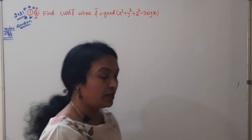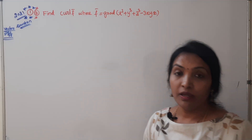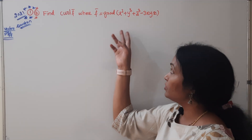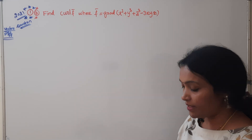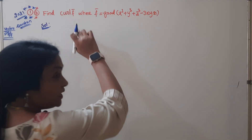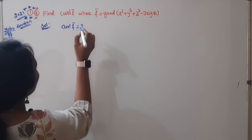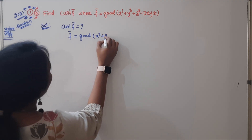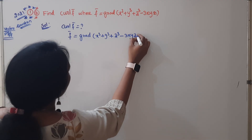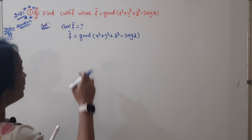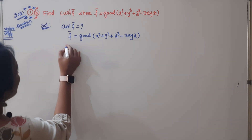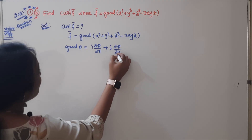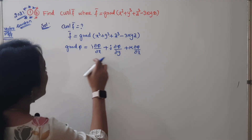Now the second problem: find curl(F̄) where F̄ is given in terms of gradient. F̄ = grad(φ) where φ = x³ + y³ + z³ - 3xyz. First we simplify by computing the gradient, then substitute that F̄ value into our curl formula. Grad(φ) means i·(∂φ/∂x) + j·(∂φ/∂y) + k·(∂φ/∂z).